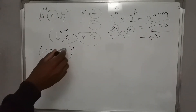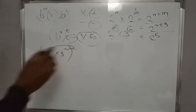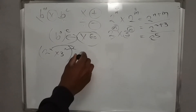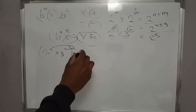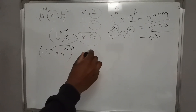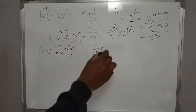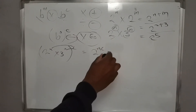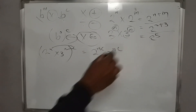When a term is inside brackets with an exponent outside, the exponent outside multiplies each exponent inside. So it becomes 2 raised to nc times 3 raised to nc.